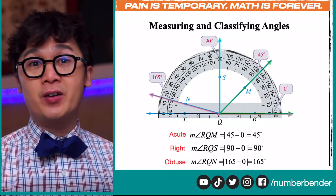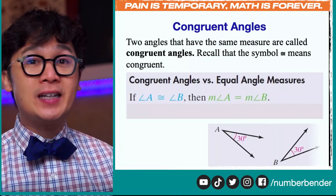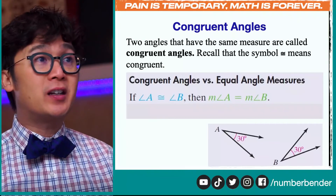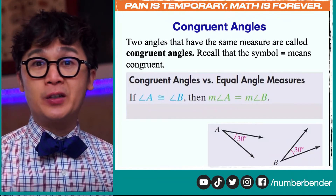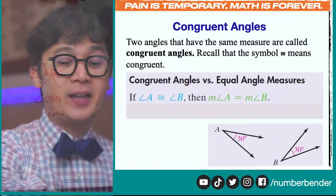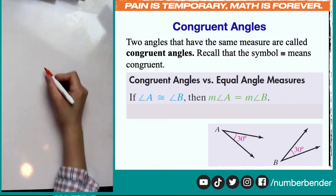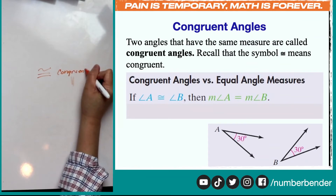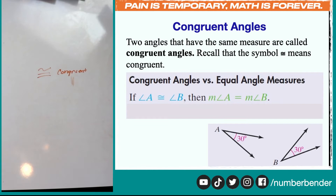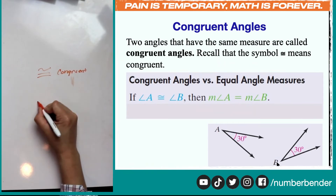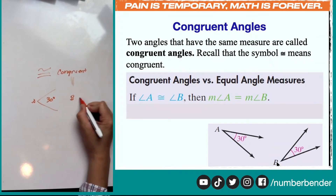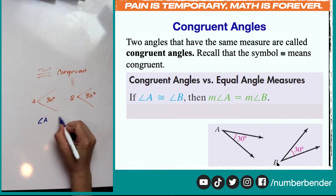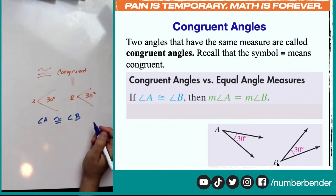Notations are important, and speaking of notations, we have another one: congruency of two angles. Congruent, by definition, means they have the same measurement. Two angles with the same measures are called congruent angles. The symbol for congruency is that special symbol — an equal sign with a curl at the top. Here we see angle A is 30 degrees and angle B is also 30 degrees, so angle A is congruent to angle B.